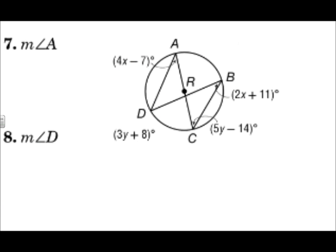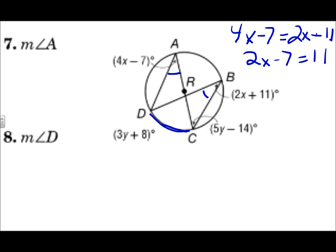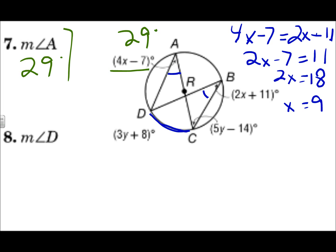For the measure of angle A: angle A intercepts arc DC, and angle B also intercepts arc DC, which means those two angles are congruent. So 4x minus 7 equals 2x plus 11. Solve for x: subtract 2x from both sides, add 7 to both sides, divide by 2 — x is 9. The measure of angle A is 4 times 9 minus 7, which is 36 minus 7, or 29 degrees.